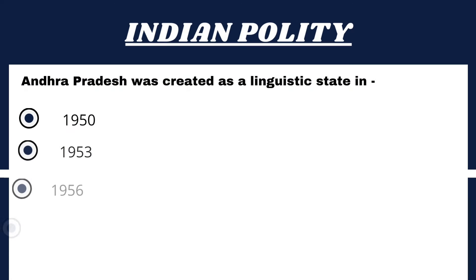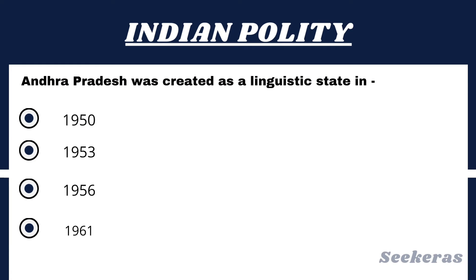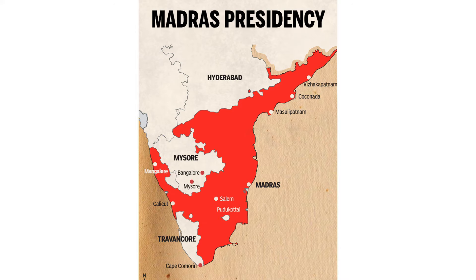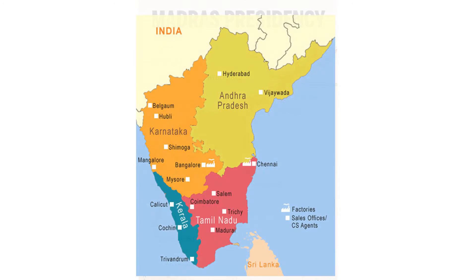Question number 1. Andhra Pradesh was created as a linguistic state in: Option 1, 1950; Option 2, 1953; Option 3, 1956; or Option 4, 1961. The answer is Option 2, 1953. The Parliament passed the Andhra State Act in September 1953. On 1 October 1953, 11 districts in the Telugu-speaking portion of Madras state became the new Andhra state with Kurnool as the capital.